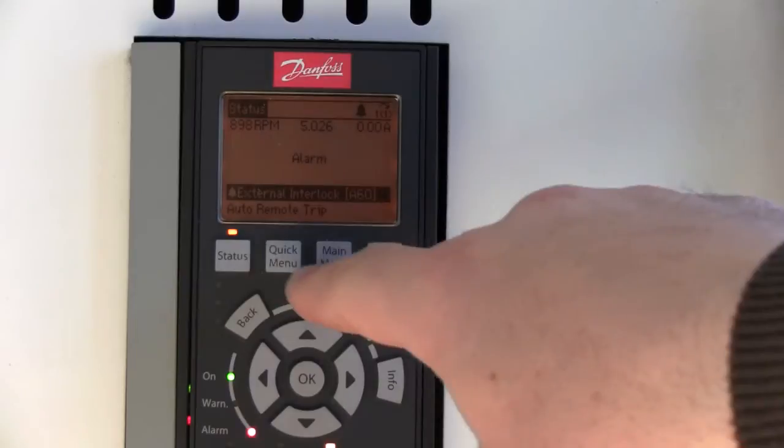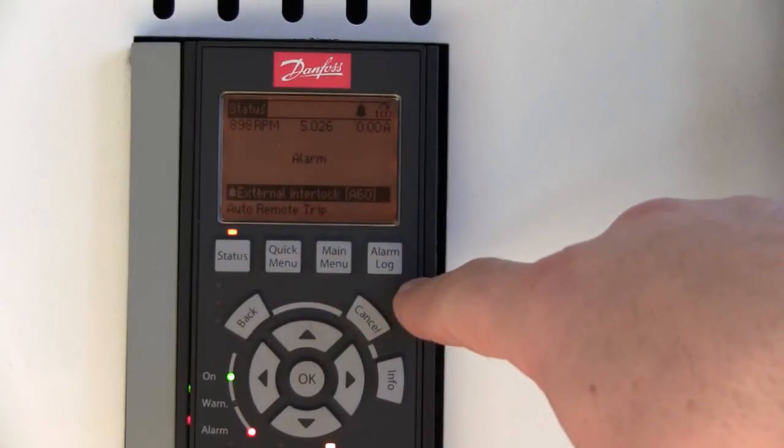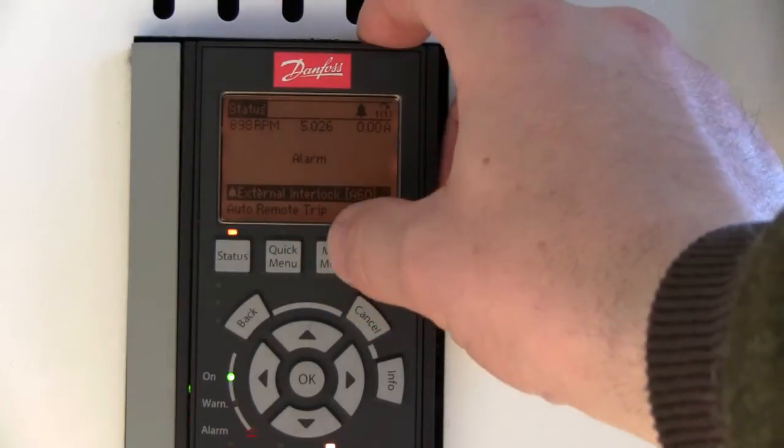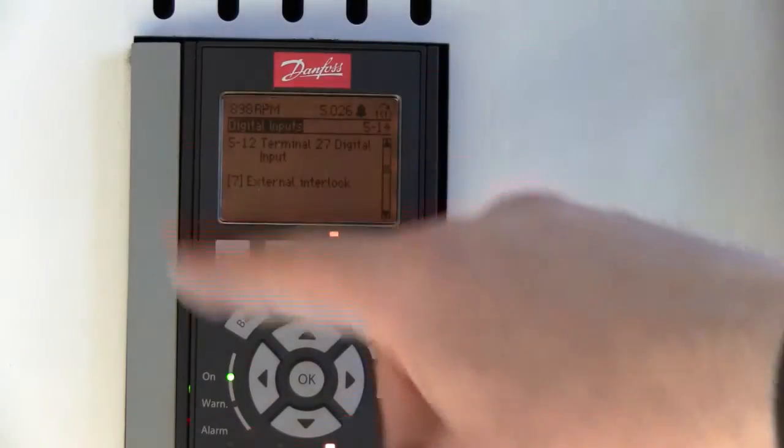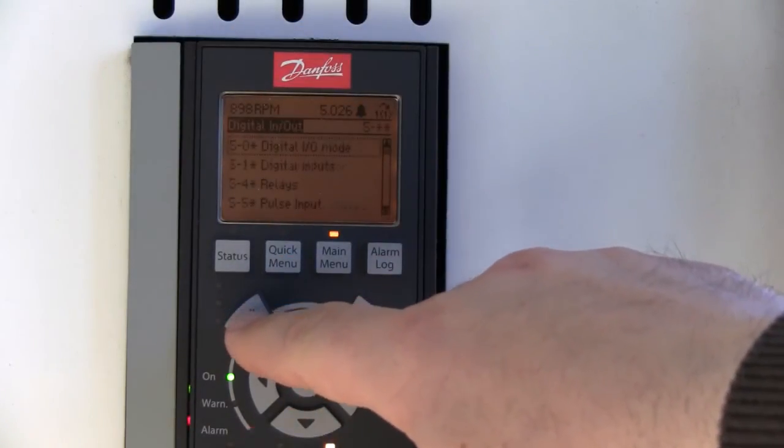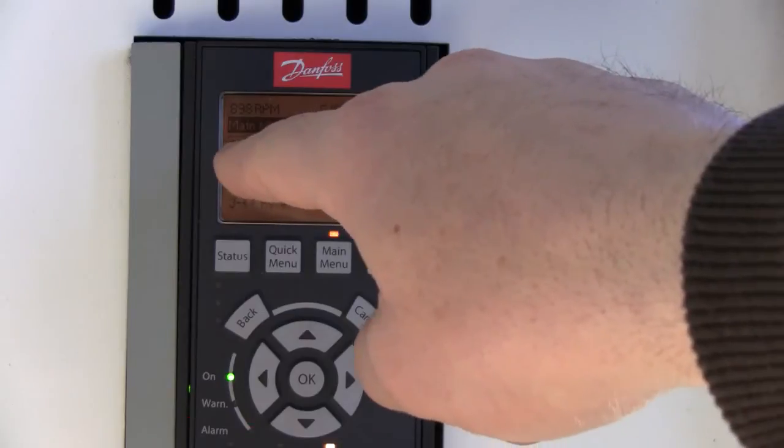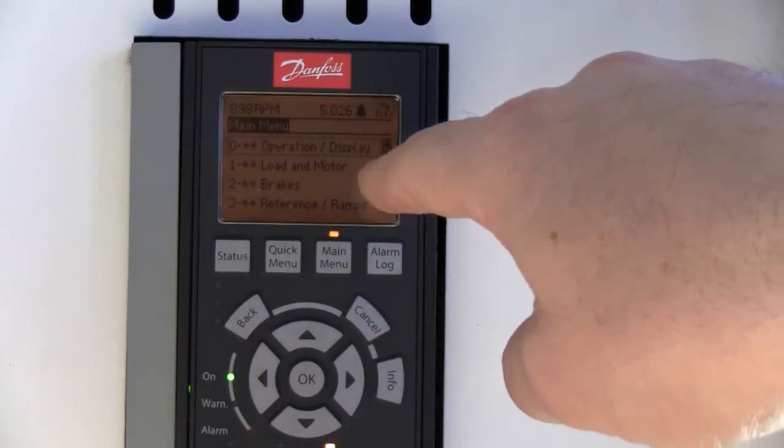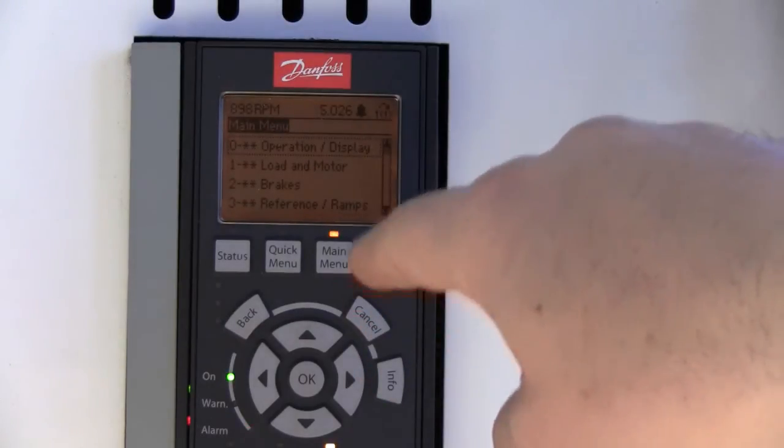You hit your status button, quick menu, main menu, and alarm log. I always push the main menu. This will bring up the main menu. I'm going to push back, back out of here. Normally it would pop up to main group 0 operation to display.